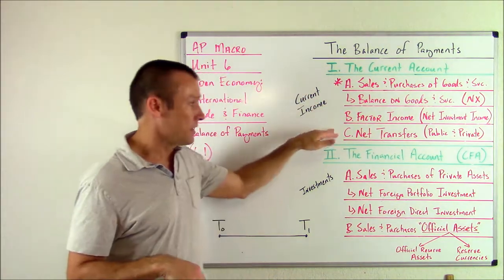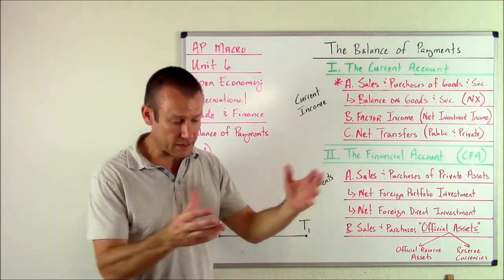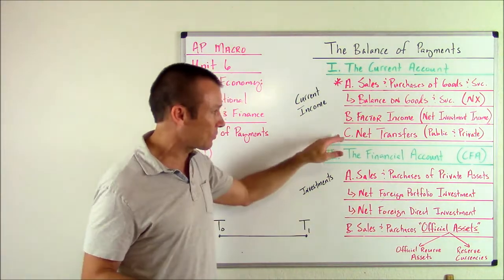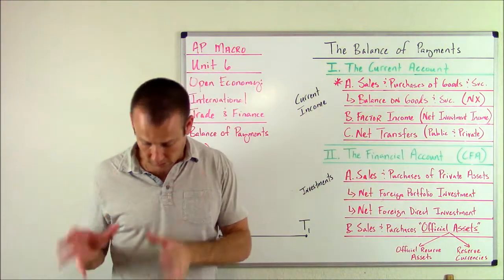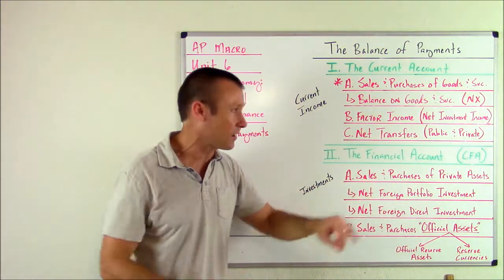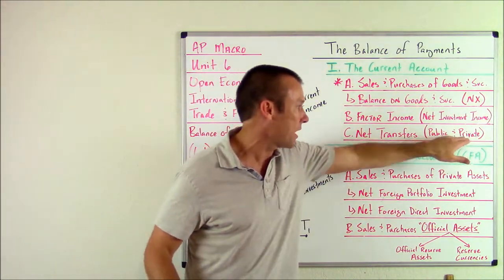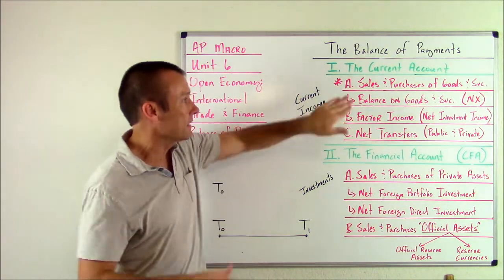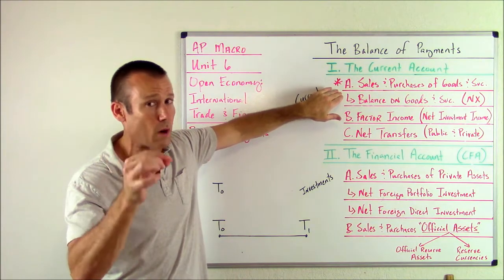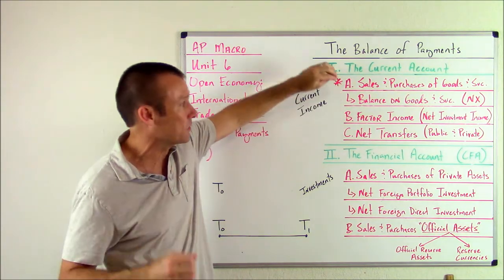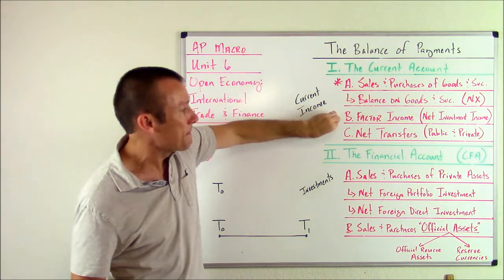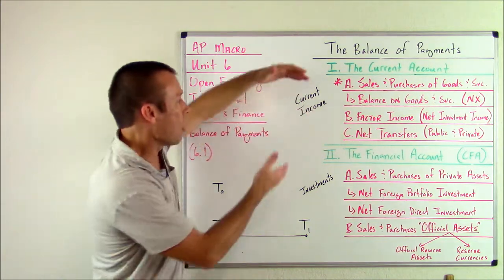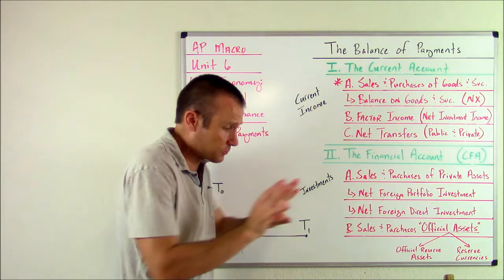Finally, sub-account C is net transfers. This happens between private individuals all the time — families spread across countries remit money back and forth to each other. That's a private transfer and it gets recorded here. Also, foreign aid: when one government sends money to another government, that's a public transfer. So both public and private transfers get recorded in C. That's the current account: balance on goods and services (net exports), past investment income (interest and dividends), and simple transfers.